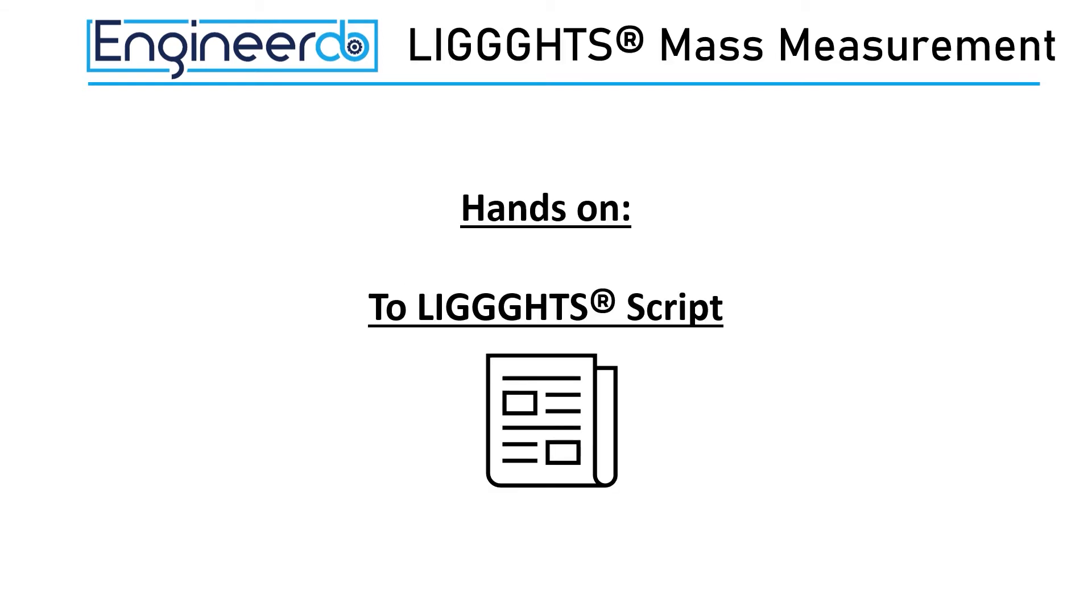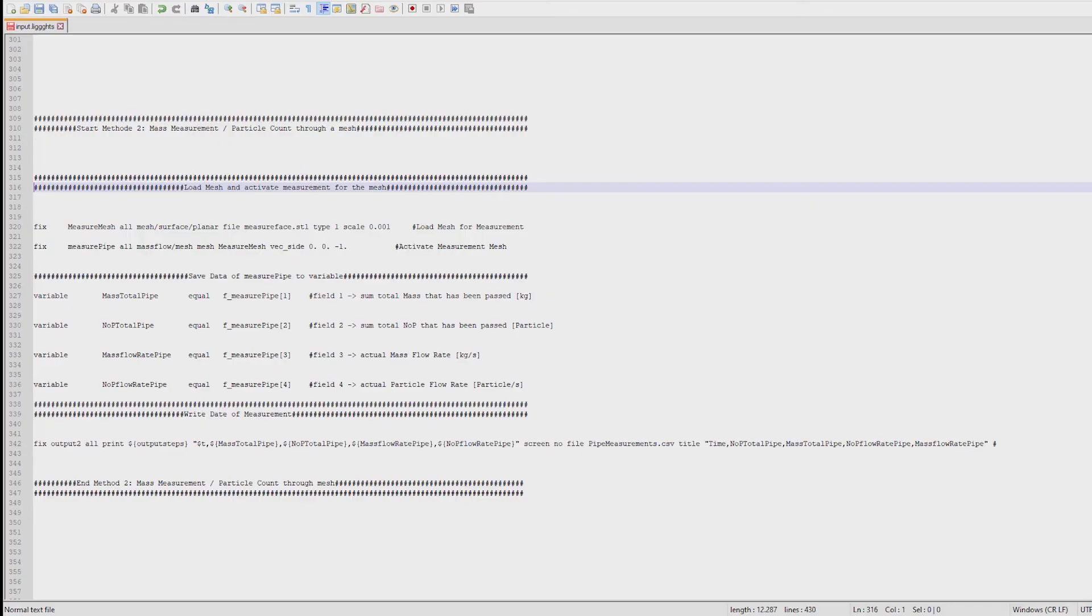Let's take a look to the script. In the first part I explained the general script structure again. So here we will jump direct to the implementation of the measurement by mesh.